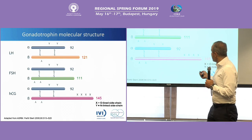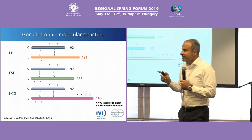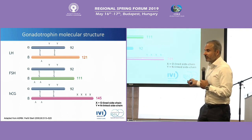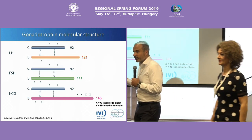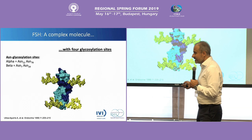What you see is the difference in the beta part. The amino acid number differs, but also the sequence of those amino acids differs significantly. For example, hCG has a so-called carboxyterminal peptide of 28 amino acids, which gives hCG a significantly longer half-lifetime compared to LH.